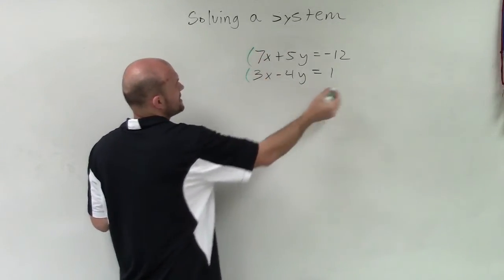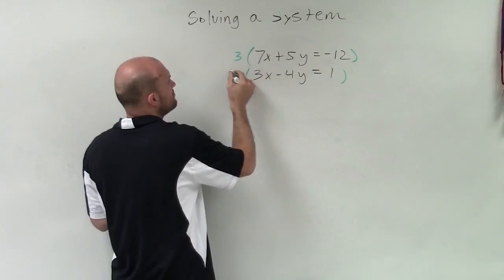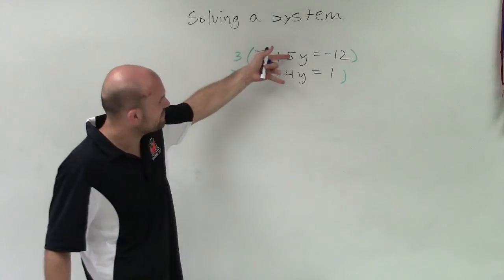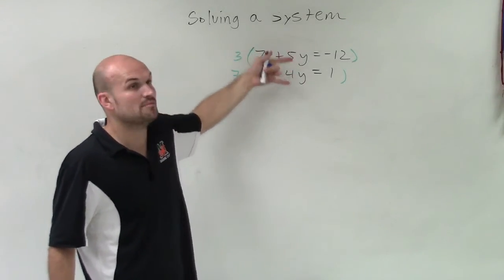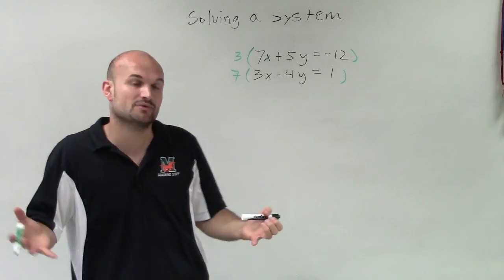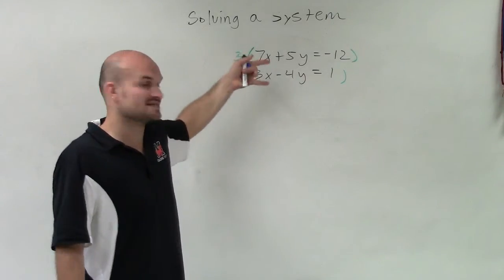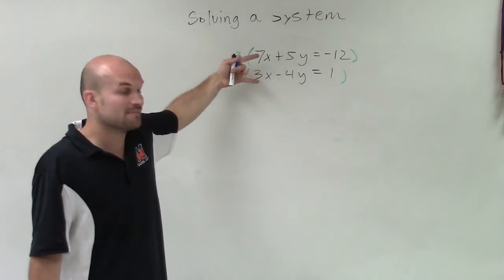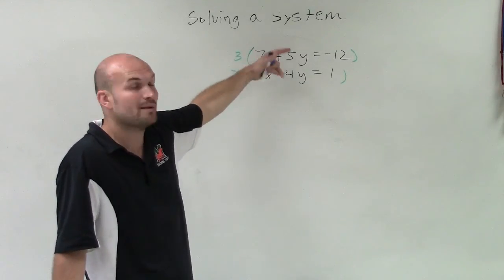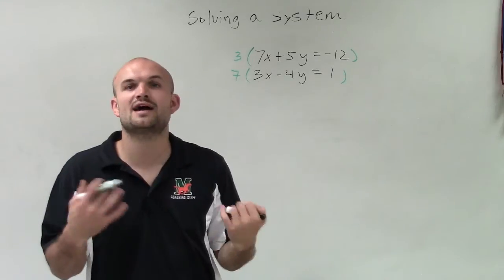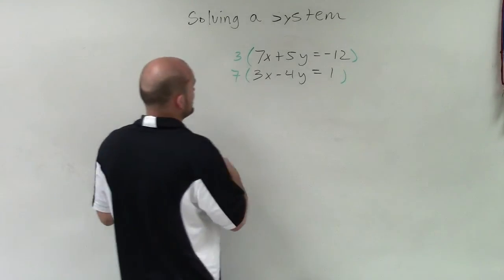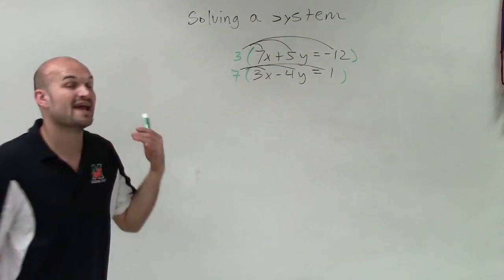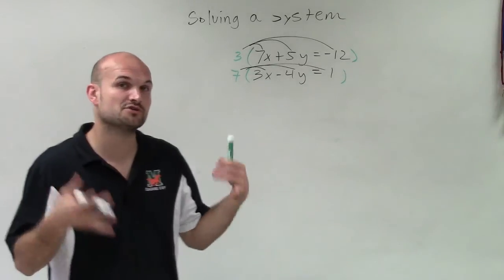I'm going to multiply the top equation by 3 and the bottom equation by 7 because I want to eliminate the x's. Notice how the 5 and 4 are positive and negative, so if we found the least common multiple, we'd keep them positive and negative and then add the two equations. Notice how the 7 and 3 are both positive — I can multiply by a negative if I want and then add, but if I multiply by two positives I'll have two positive coefficients, which means I'm going to subtract the two equations. The main important thing is we need to apply the distributive property and multiply our multiplier by every single term in our equation to produce equivalent equations.